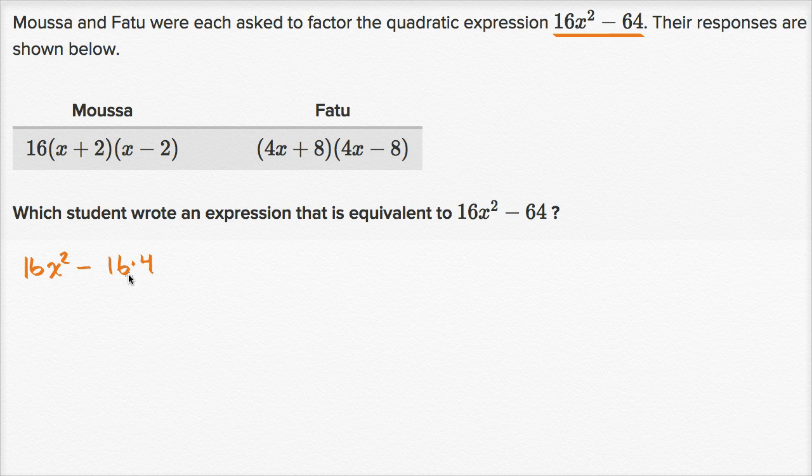When you write it like that, it's very clear that you can factor out a 16. So this is going to be equal to 16 times what you have left over is x squared minus four.